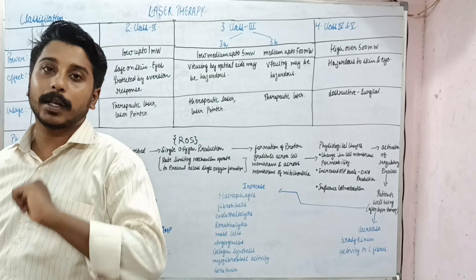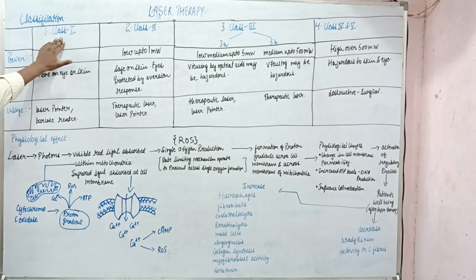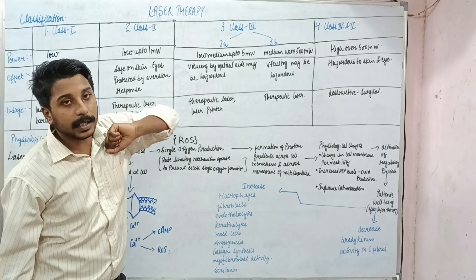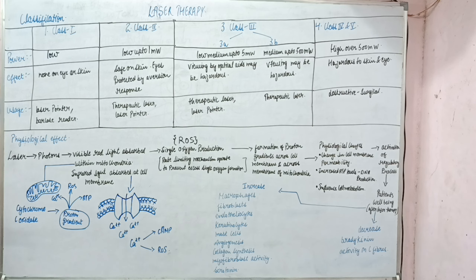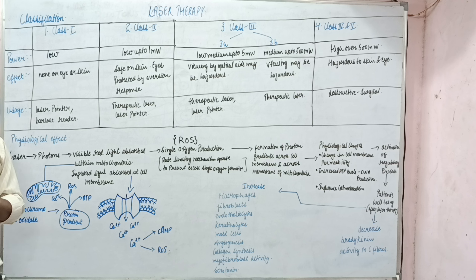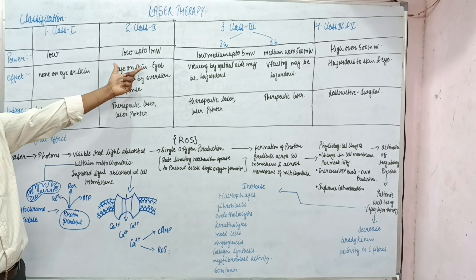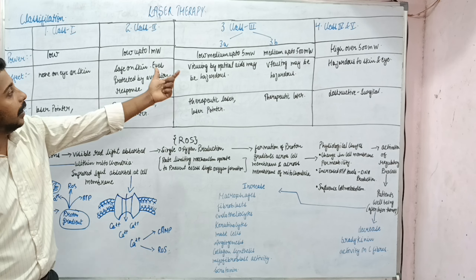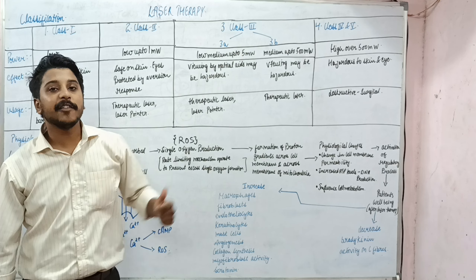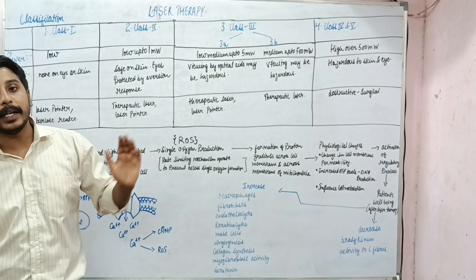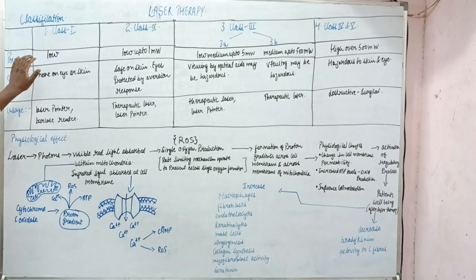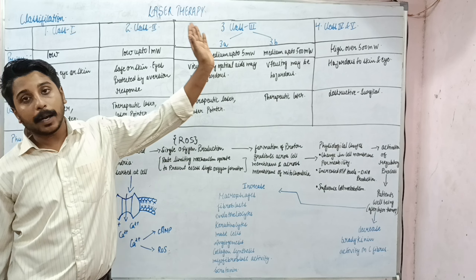Under the classification, laser is classified into four classes — more appropriately five classes. Class 1, Class 2, Class 3, with Class 3 further divided into 3a and 3b, and lastly Class 4 and 5. Regarding power: Class 1 is very low power, Class 2 is low up to 1 milliwatt, Class 3a is low-medium up to 5 milliwatt, Class 3b is up to 500 milliwatt, and Class 4 and 5 are greater than 500 milliwatt.